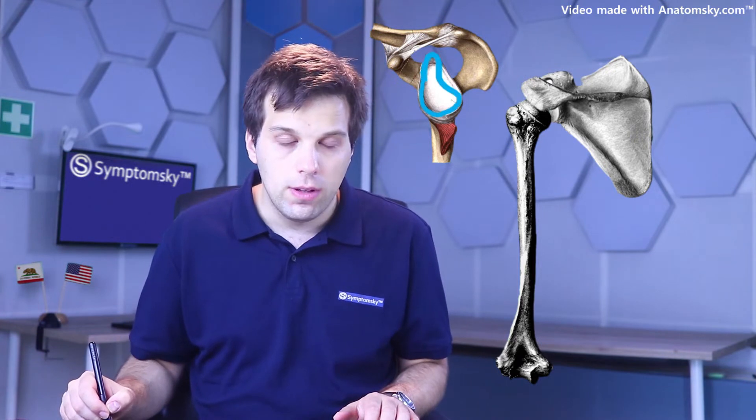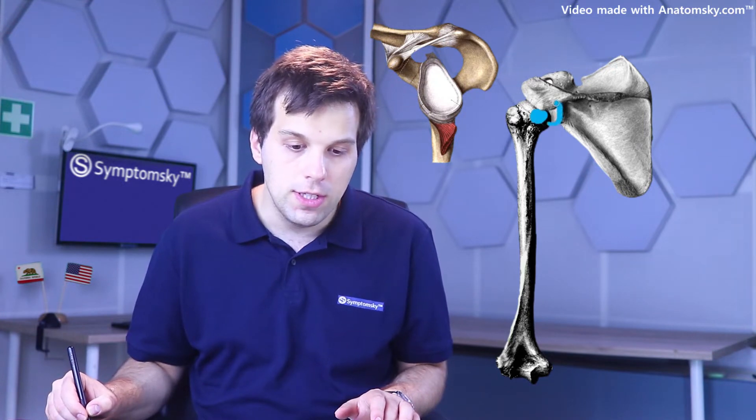But why gleno? Why not scapulohumeral joint? Well, because this fossa over here is called the glenoid fossa, and that is where the head of the humerus is articulating with the scapula. So those are the two joints of the shoulder: the acromioclavicular joint and the glenohumeral joint.